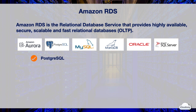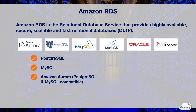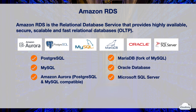PostgreSQL is an enterprise-level open-source relational database engine. MySQL is one of the most popular open-source relational database engines. Amazon Aurora is a fully managed relational database engine compatible with MySQL and PostgreSQL — it's up to five times faster than standard MySQL and three times faster than standard PostgreSQL. MariaDB is a popular open-source database engine based on MySQL. RDS also offers fully licensed and managed Oracle and Microsoft SQL database engines.